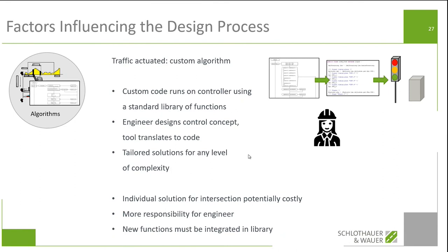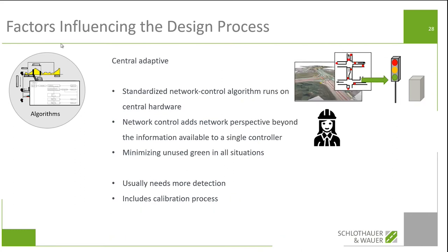The complexity is basically only limited by the computing power of the controller. The last algorithm type I want to talk about is central adaptive standardized network control algorithms. They run on central hardware. The network control adds a network perspective beyond what's available to a single controller. You're minimizing unused green in all situations, or at least trying to, and you will always find a cycle time close to the optimum. The limiting factor is you usually need more detection, so it could be more costly to implement. And this always includes an extra calibration process — not only for the individual intersection, but ensuring the adaptive control works within expected parameters.